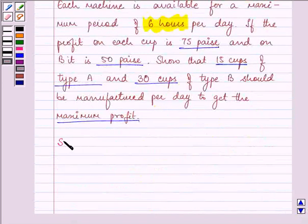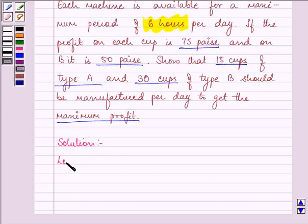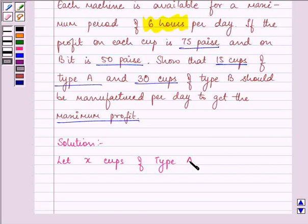So let us formulate this question. First of all, let X cups of type A be there and Y cups of type B be there.